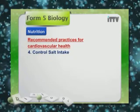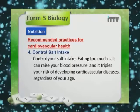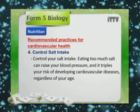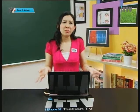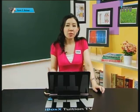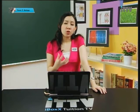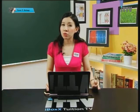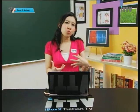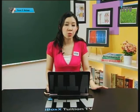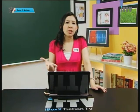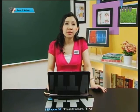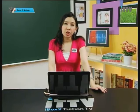The fourth recommended practice is to control salt intake. Eating too much salt can raise your blood pressure and triples your risk of developing cardiovascular disease regardless of age. Many common foods — like soup noodles with MSG and even bread — contain high amounts of salt. Salt increases blood pressure, which contributes to cardiovascular diseases, so high blood pressure is generally very bad for health.